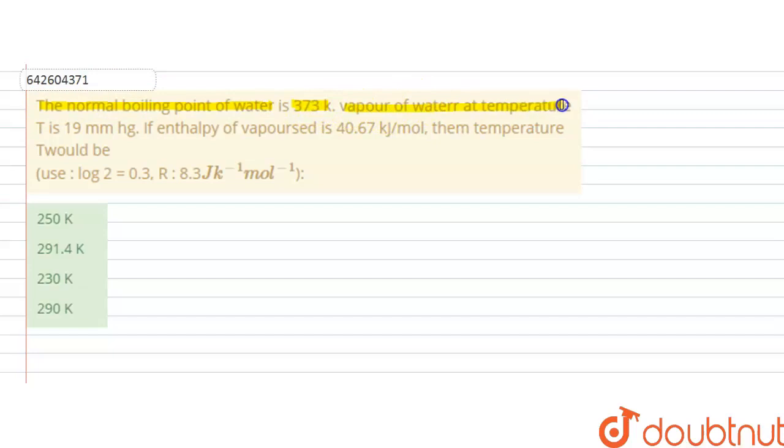Vapor pressure of water at temperature T is 19 millimeters of mercury. The enthalpy of vaporization is 40.67 kilojoule per mole. Then the temperature T would be, using log 2 equals 0.3 and R value is 8.3 joule per kelvin per mole.